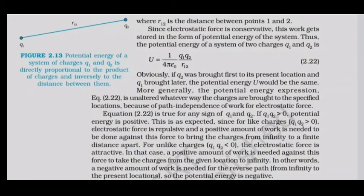Since the electrostatic force is conservative, this work is stored as potential energy of the system. Thus, the potential energy of two charges q1 and q2 is U = k·q1·q2/r12. This expression is independent of the order in which the charges are brought to their locations, due to path independence of work for conservative forces.